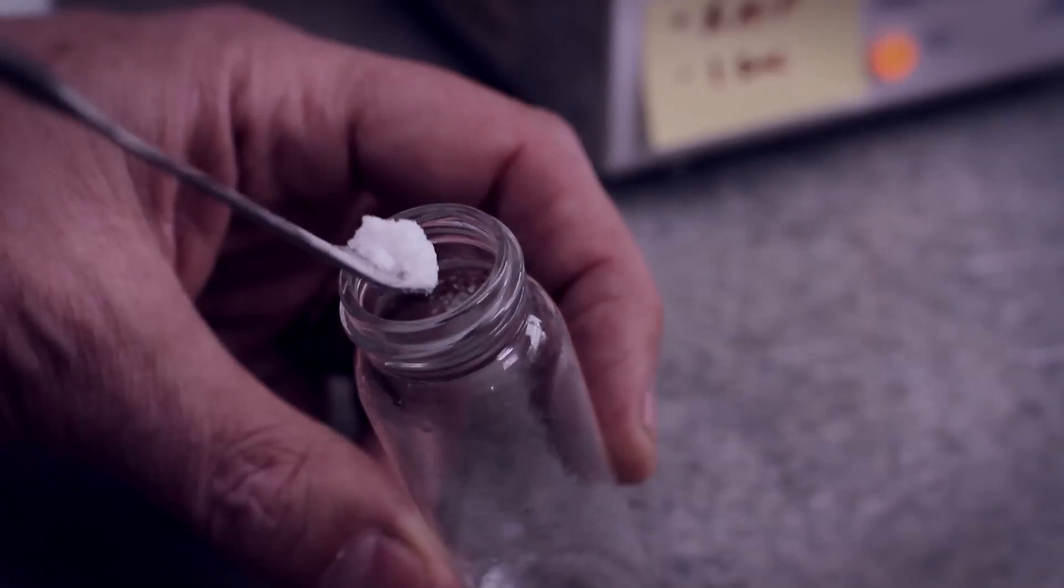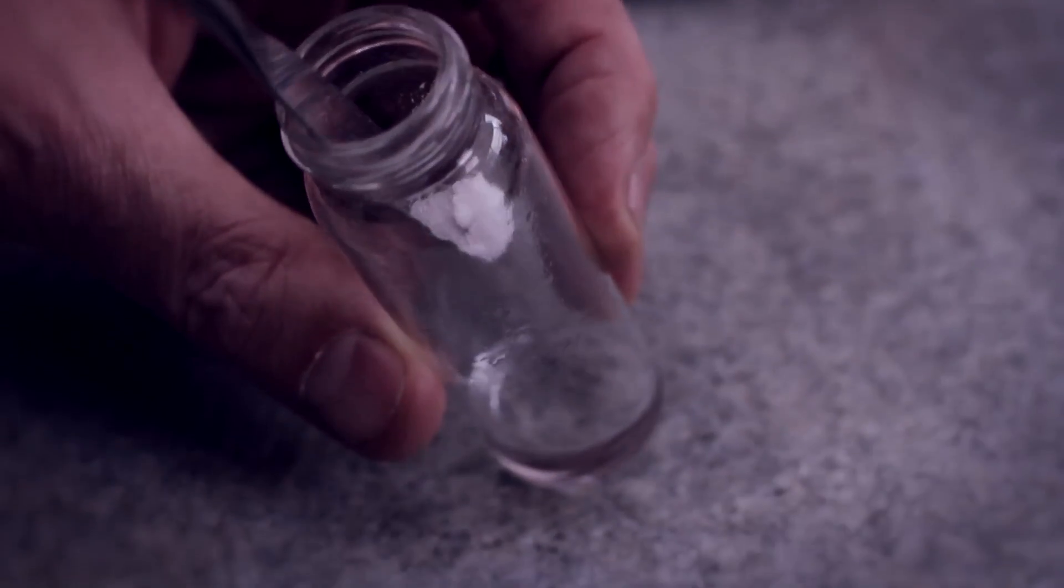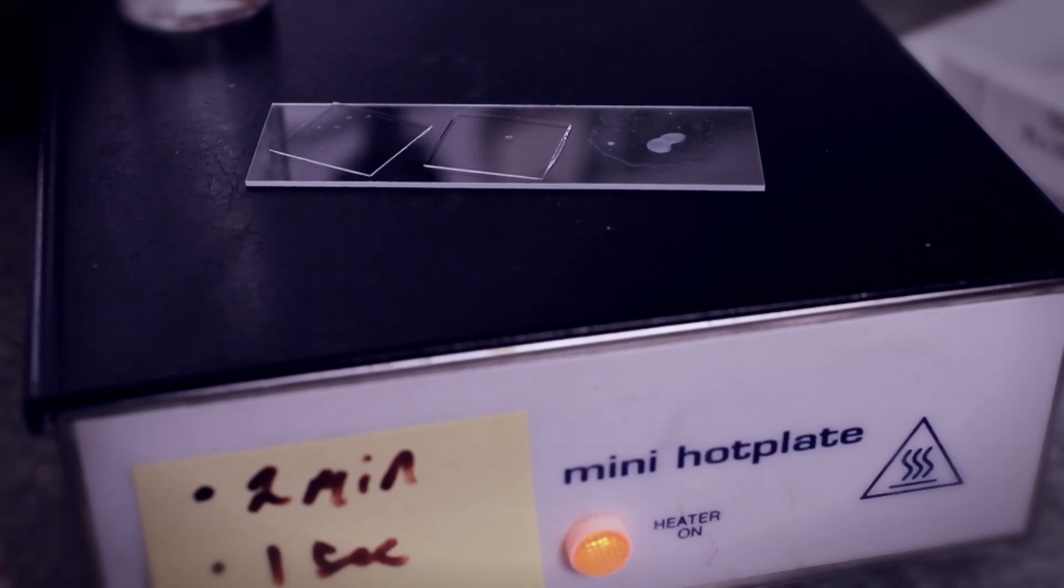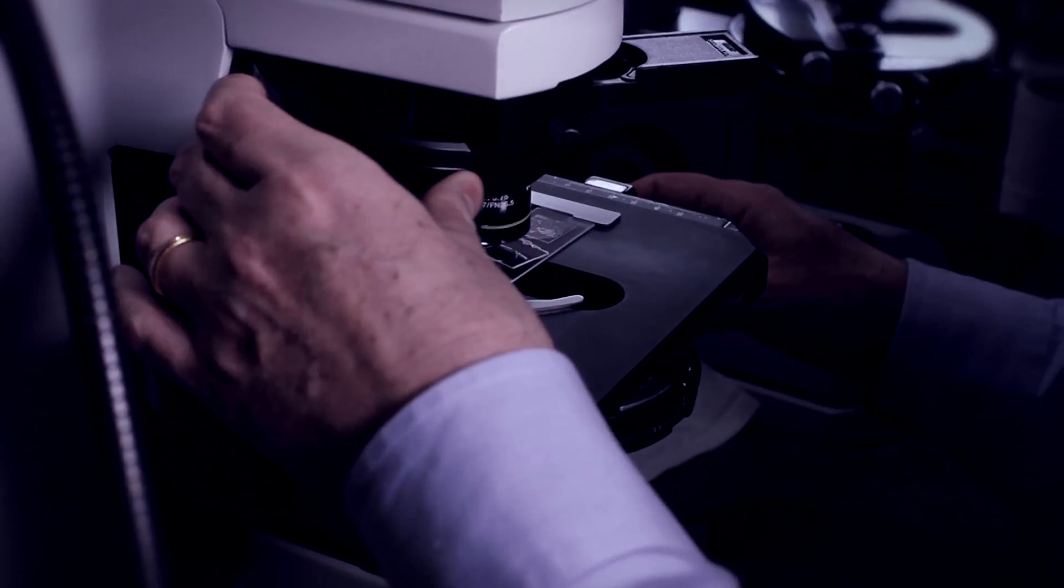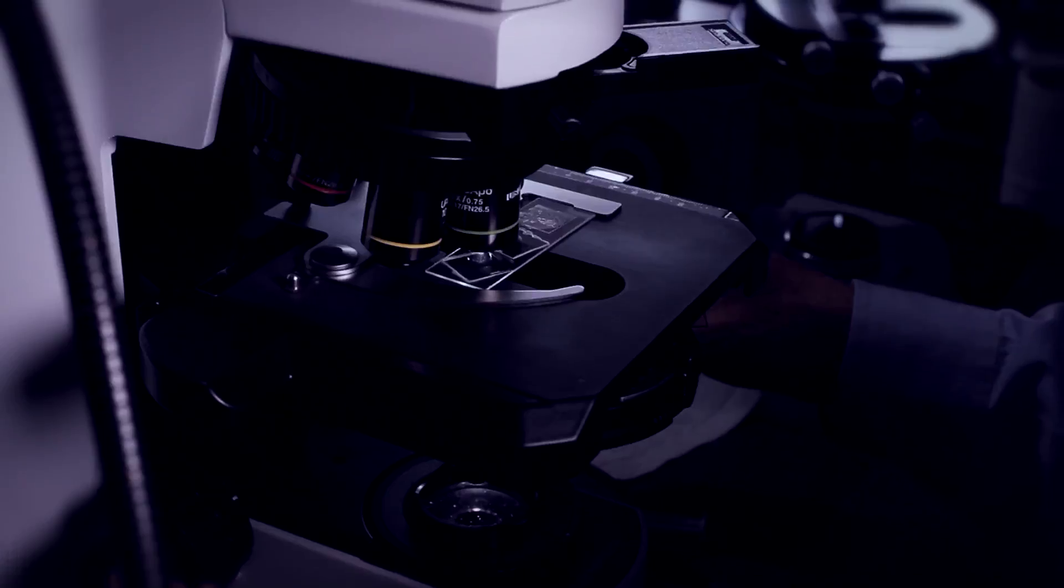Now vitamin C is a colorless white powder, but if you dissolve it in water and then crystallize it under a polarizing light microscope, the colors and forms that you see are spectacular.